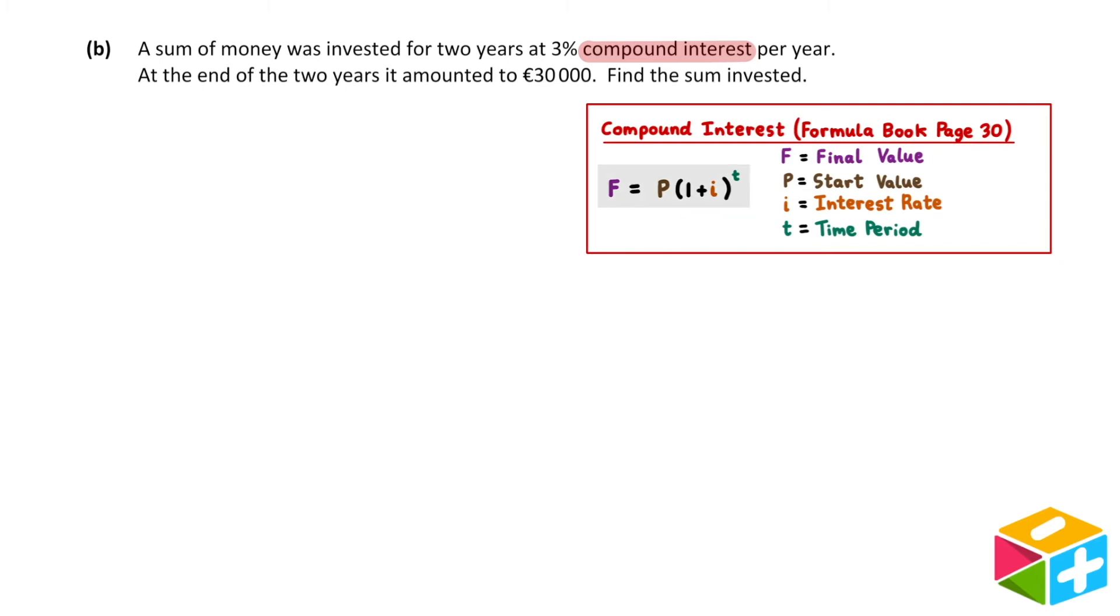This states that f is equal to p times 1 plus i to the power of t. Here, f is the final value, and this refers to the €30,000 we'll have at the end of the two years. P is the start value, and in our question, we don't know the start value. We're trying to find the sum that was invested at the start.